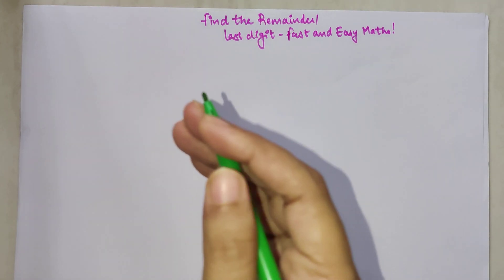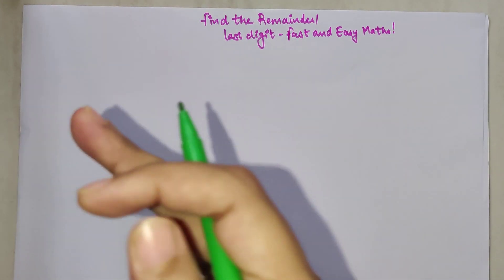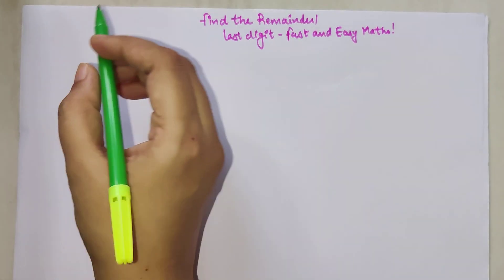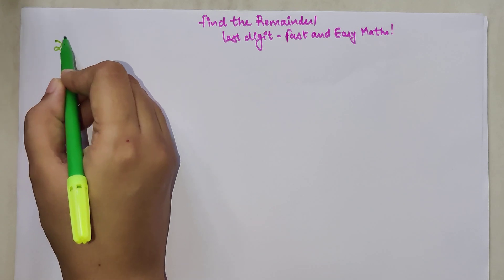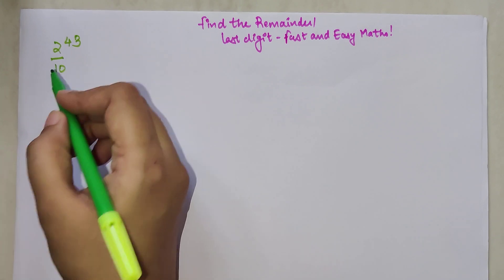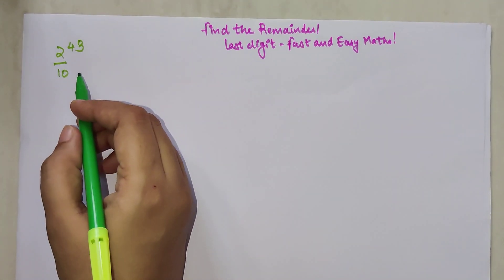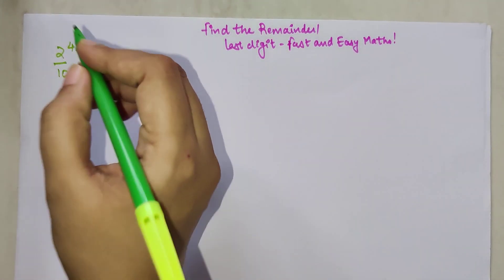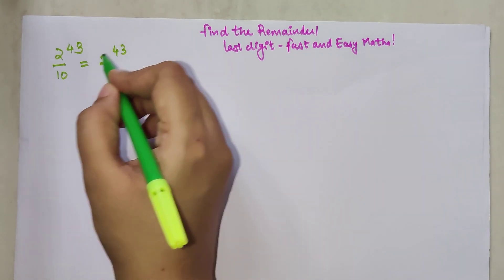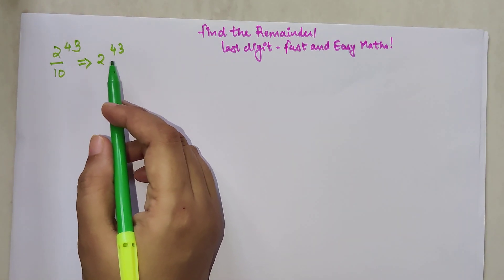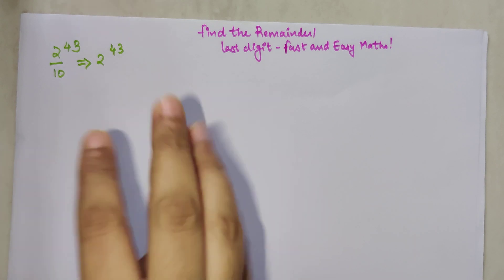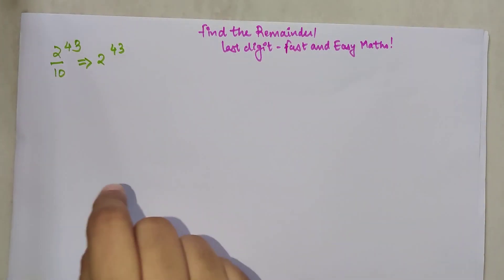Why have I written both of these? Because finding the remainder and finding the last digit are actually the same thing. For example, if we have 2 raised to 43 and need to find the remainder when divided by 10, that is absolutely equal to finding the last digit of 2 raised to 43. Both types of questions can be solved using the same tricks.